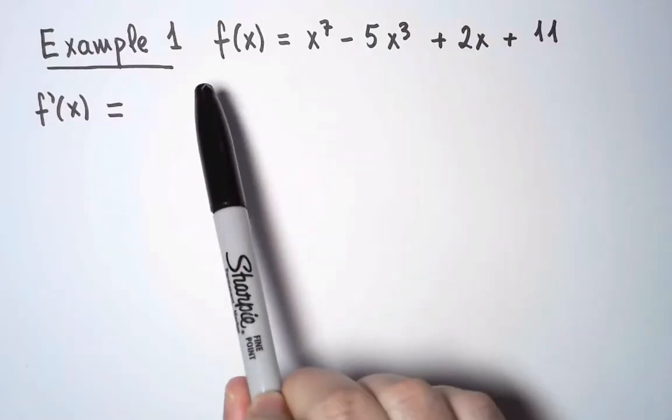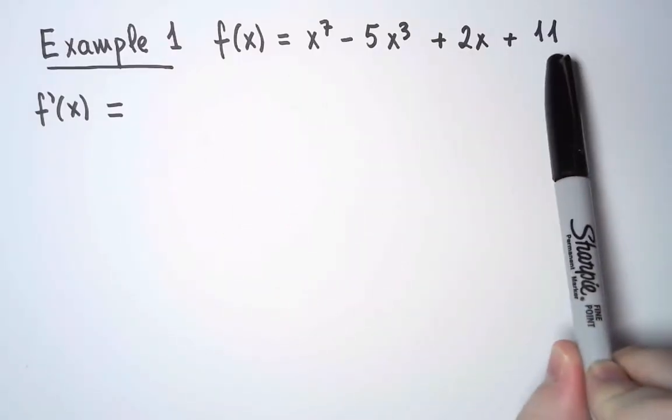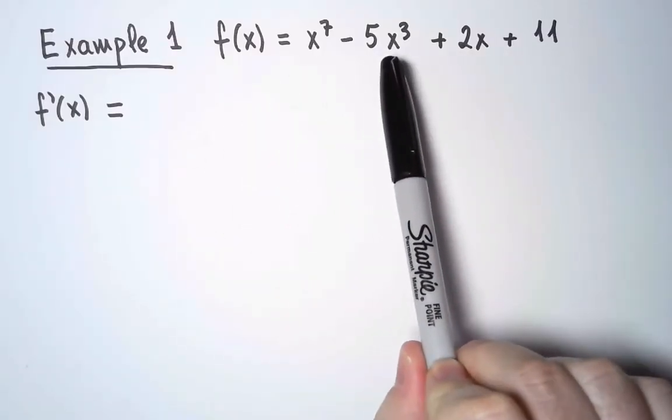For my first example, I'll compute the derivative of this polynomial. A polynomial is a sum of terms, and every term is a constant times a power.